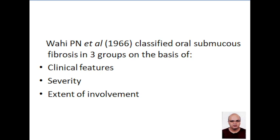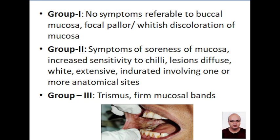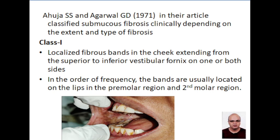YPN classified oral submucous fibrosis into three groups based on clinical features, severity, and extent of involvement. In group one, no symptoms are seen — only focal pallor or whitish discoloration of the mucosa. In group two, sourness of the mucosa and increased sensitivity are noted; lesions are diffuse, white, extensive, and indurated, involving one or more anatomical sites. In group three, trismus and firm mucosal bands are seen.